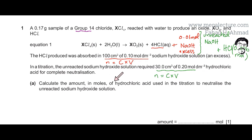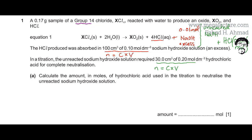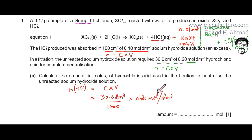Part A asks us to calculate the amount in moles of HCl used in the titration to neutralize the unreacted NaOH. The calculation is: 30 ÷ 1000 dm³ × 0.2 mol per dm³ = 0.006 moles.